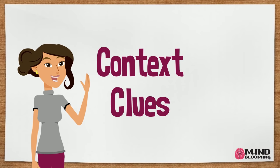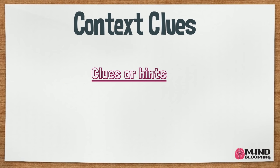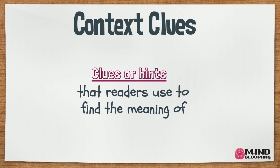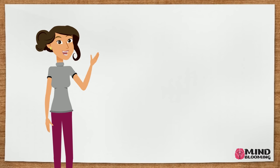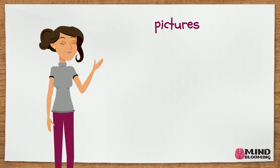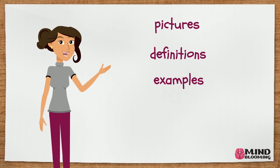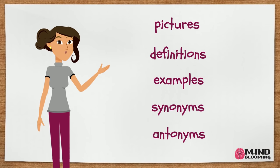Context clues. What are context clues? Context clues are clues or hints that readers use to find the meaning of unknown words. We can find clues to a word we don't know or don't understand in many different ways. We can find clues in pictures. We can also find them in sentences such as definitions, examples, synonyms, or antonyms.